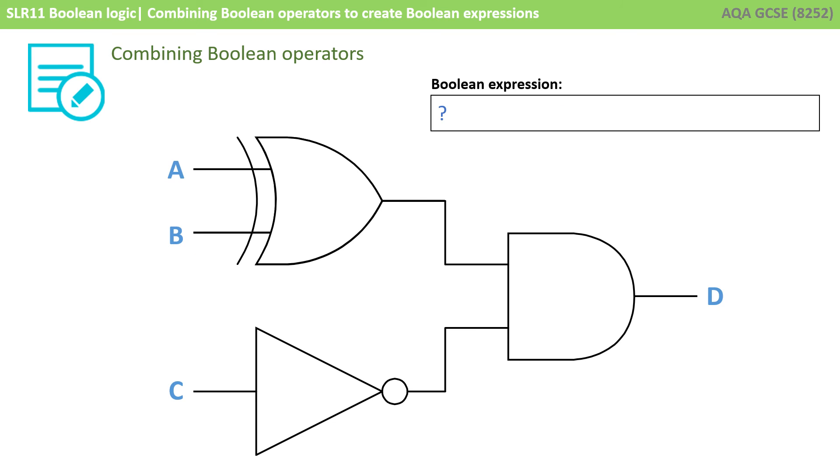Okay, so we've got one more example here. To see if you've got this, I've labelled up the inputs and the output. Pause the video, get out a scrap of paper and see if you can write out the Boolean expression. So what you should have ended up with here is D equals A XOR B AND NOT C. Now again, it doesn't matter which way round you put the two inputs to the final AND gate. So you could have easily written this as D equals NOT C AND A XOR B. They're both the same.